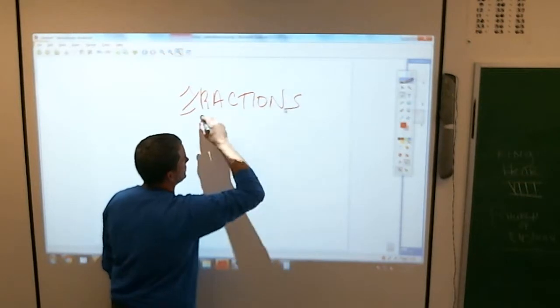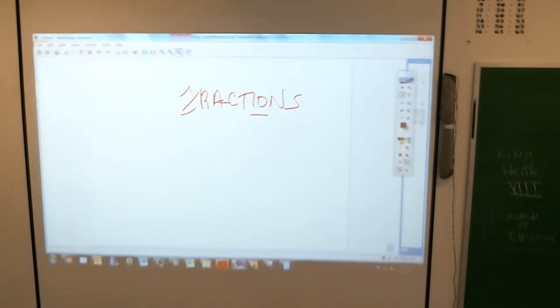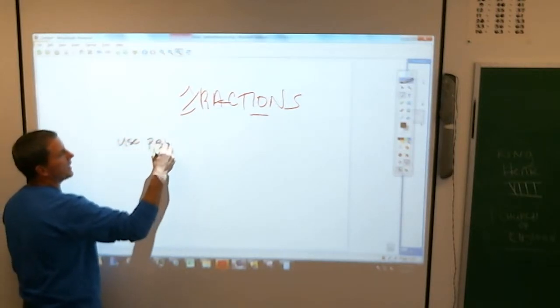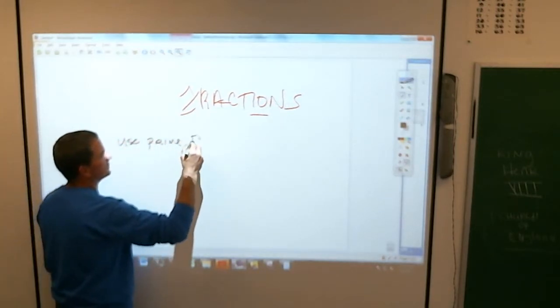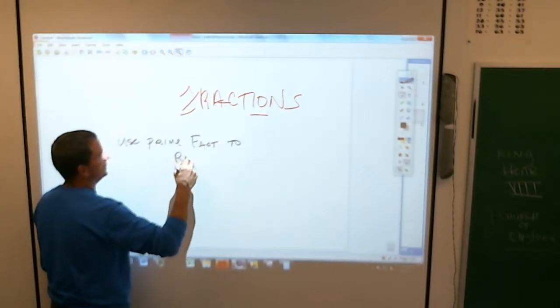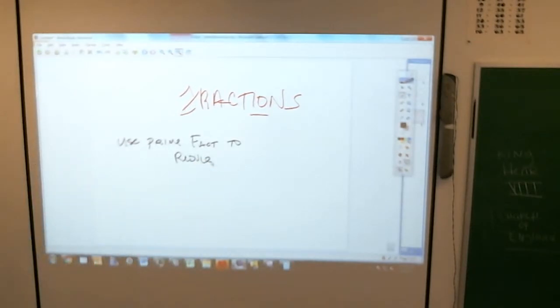Write down this set of directions here, write down the book. So, use prime factorization to reduce. Use prime factorization to reduce. And the fraction you're supposed to reduce is 20 over 36.